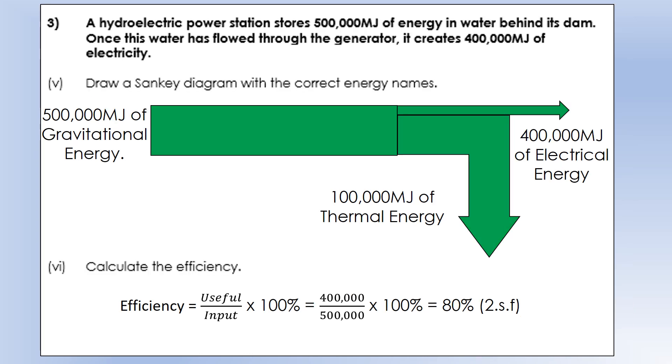Hydroelectric power station is a store of massive quantities of energy. We've got 500,000 megajoules. But once that goes to the generator, you only get 400,000 megajoules of electricity. So it's actually quite efficient, but we still wasted some energy. We're starting with gravitational potential energy, water stored behind a dam at the top of a hill. So we've got 500,000 megajoules of GPE.